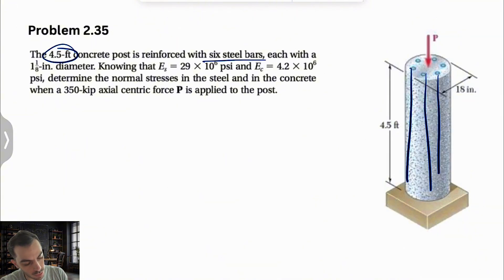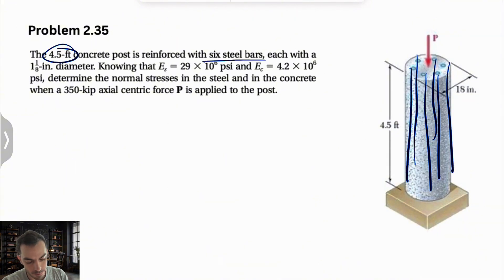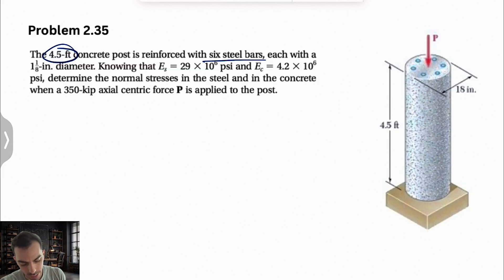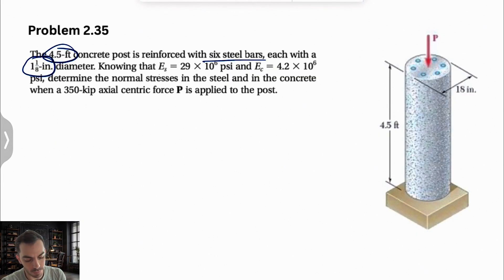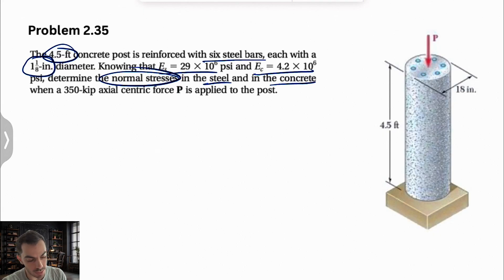These steel bars — we're going to have six of them, and we know that each has a diameter of 1 and 1/8 inch. We know the elastic modulus for both steel and concrete, and we need to determine the normal stress in both, knowing that the force P applied on top is 350 kips.